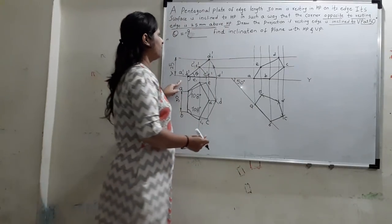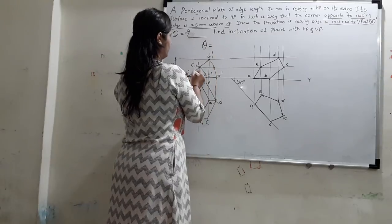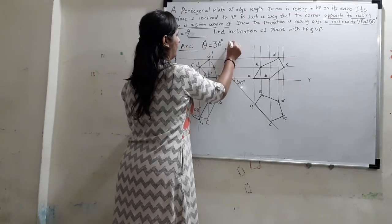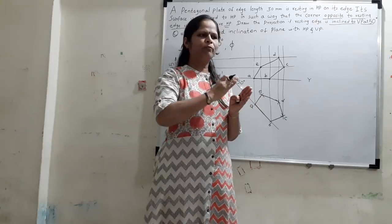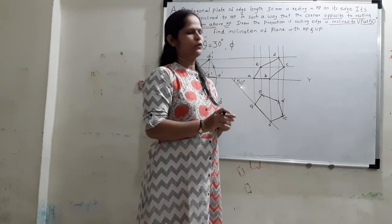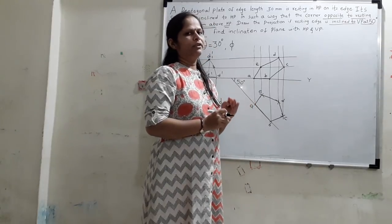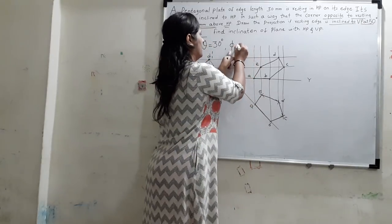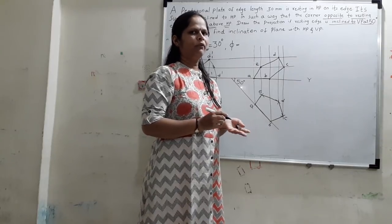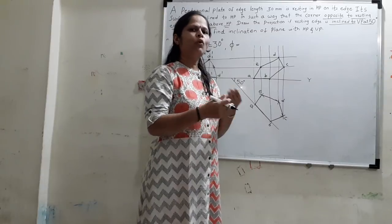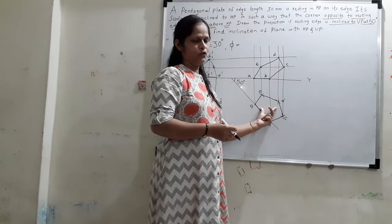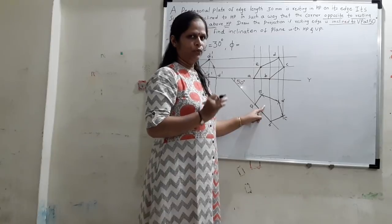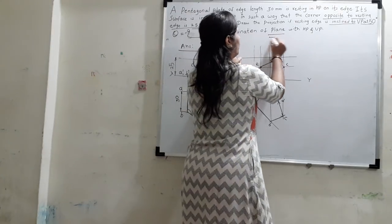The inclination with HP — we already got theta. Let us assume it is 30 degrees. Now we have to find phi, the inclination of the pentagonal plate with the vertical plane. The inclination of the plate with VP is always observed in the top view. So we have to concentrate on the top view to get the inclination of the plane with VP.